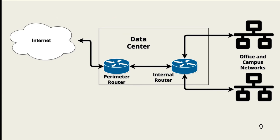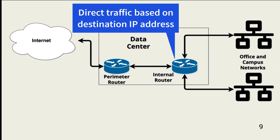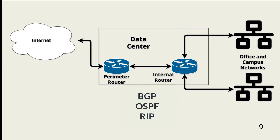Routers also operate at OSI layer 3. They are commonly used to connect separate networks using the same protocol. For example, a router sits where the internal network connects to the internet. Routers are also used to connect multiple networks owned and operated by a single organization. Layer 3 switches are also capable of routing and are more often used for internal network segmentation together with next-gen firewalls. Routers direct traffic based on the IP address of the destination device and use routing protocols to determine the best path between source and destination devices. They can also direct traffic around failed router segments. Routing protocols include BGP, OSPF, and RIP.